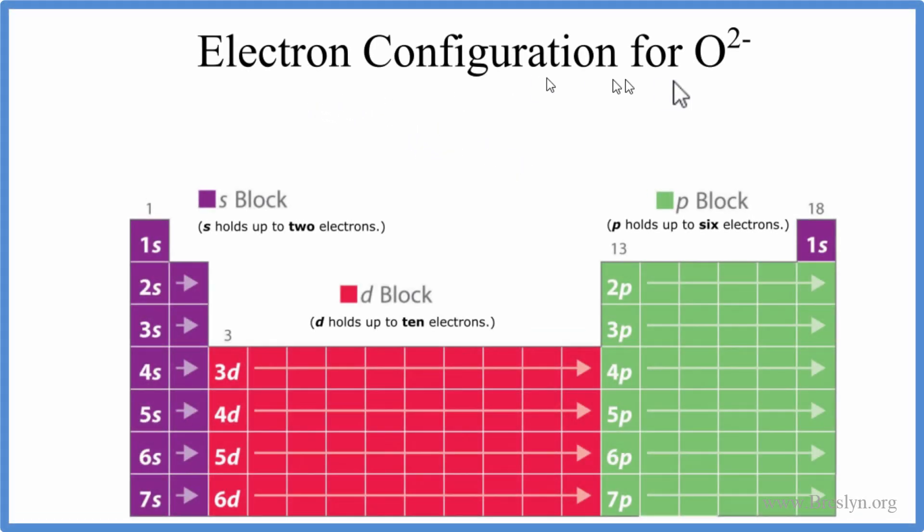To write the electron configuration for O²⁻, that's the oxide ion, first let's write the electron configuration for neutral oxygen as it's found on the periodic table.